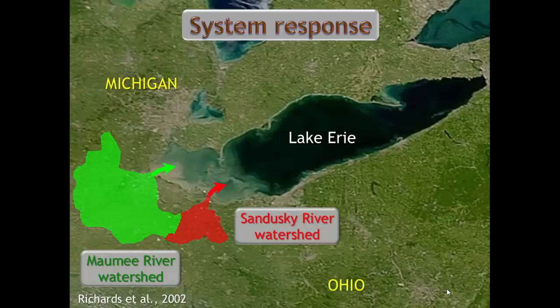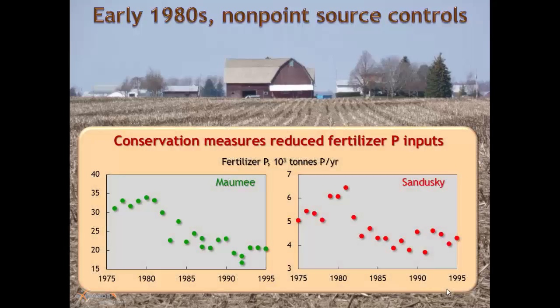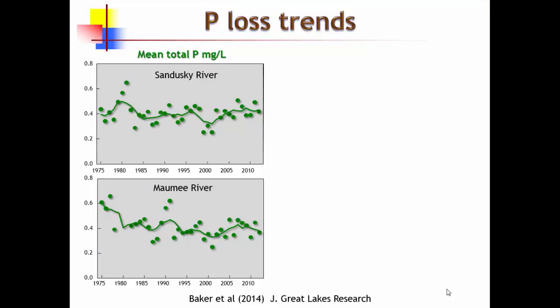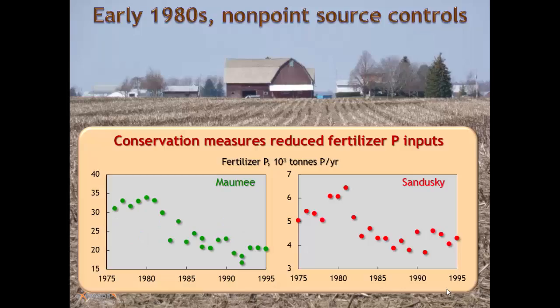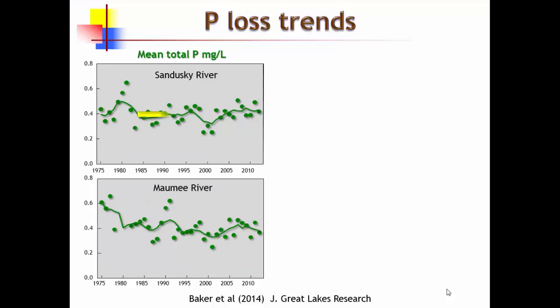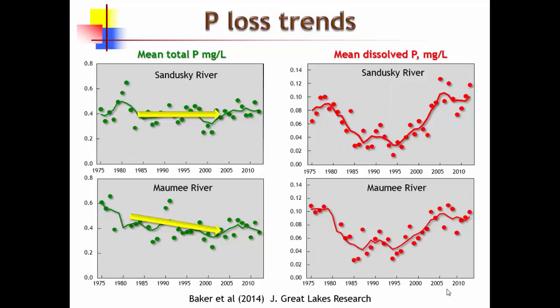Budget analysis using fertilizer sales data shows a decrease in land application of fertilizer from the 1970s onward, when nutrient management planning and soil testing were introduced. So the amount of phosphorus being applied to watersheds was decreasing. However, we still see an increase in nutrient export from some watersheds — this paradox is something that needs explaining. Systems changed slowly over time: from conventional to no-till, and from undrained to highly tile-drained. These drivers are complex.